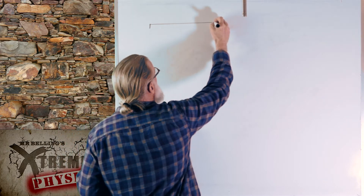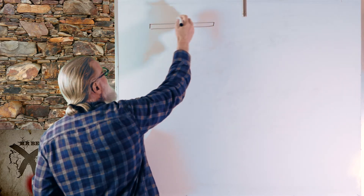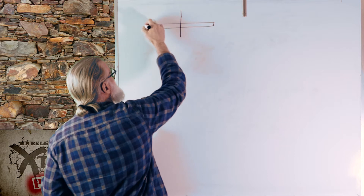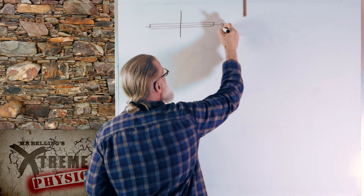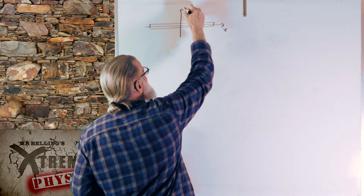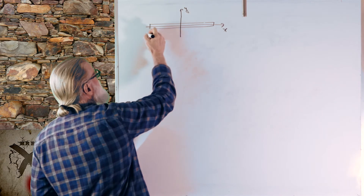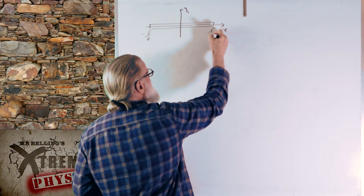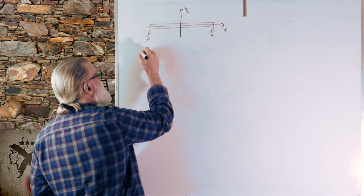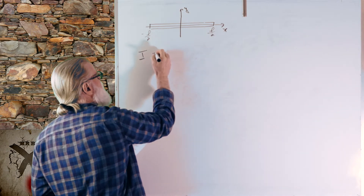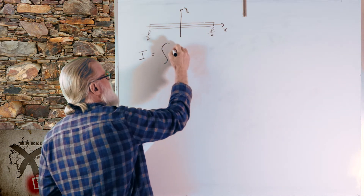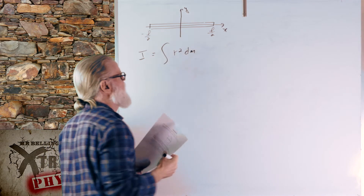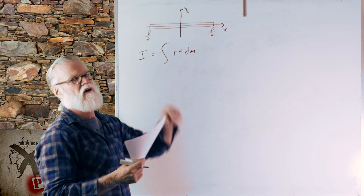So here's my thin rod of length L. We're going to rotate it about its center, so I'll put my coordinate system right at the center. We've got x, we have y. This is negative L over 2 and positive L over 2. The moment of inertia is the sum of all parts — r squared dm — the distance from the point of rotation squared times whatever the mass is.